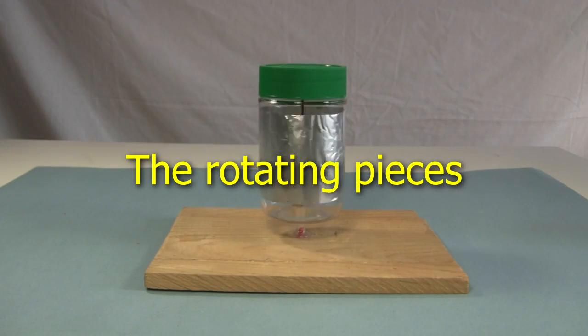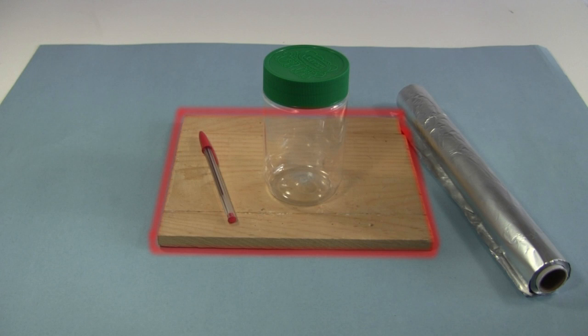I'll start with the rotating pieces. For that I need a piece of scrap wood for the base to put it all on, a pen, a plastic jar, and some aluminum foil from the kitchen.